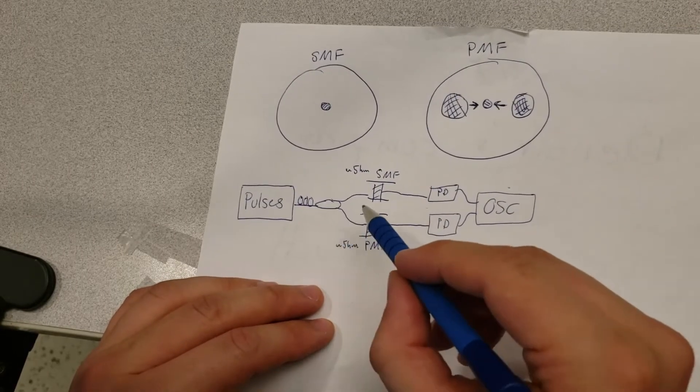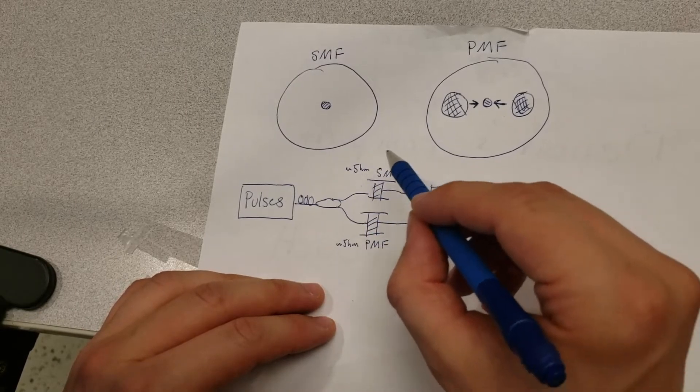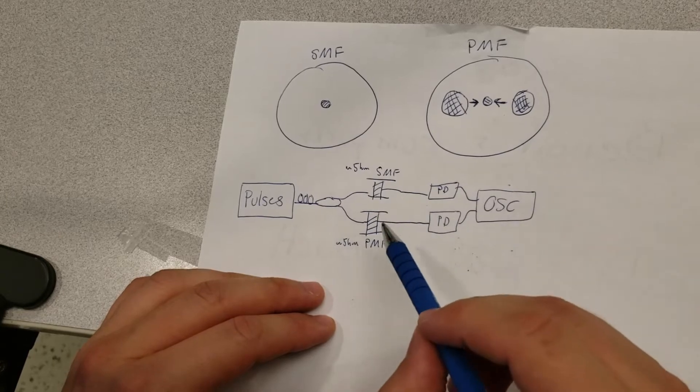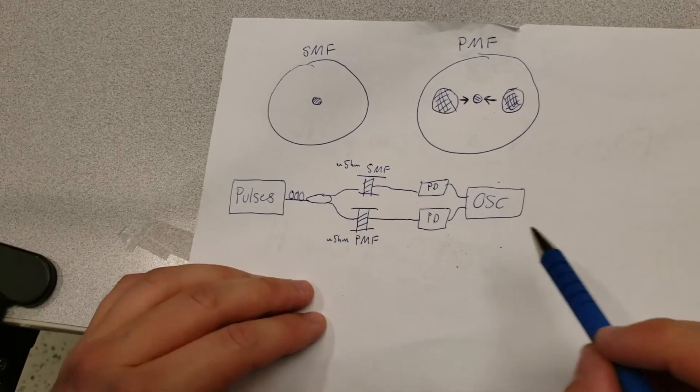If everything goes well, we should be able to see that adjusting the polarization will not affect the shape of the pulse coming out from the single mode fiber, but it will affect what happens for the output coming from the polarization maintaining fiber. So let's take a look at that.